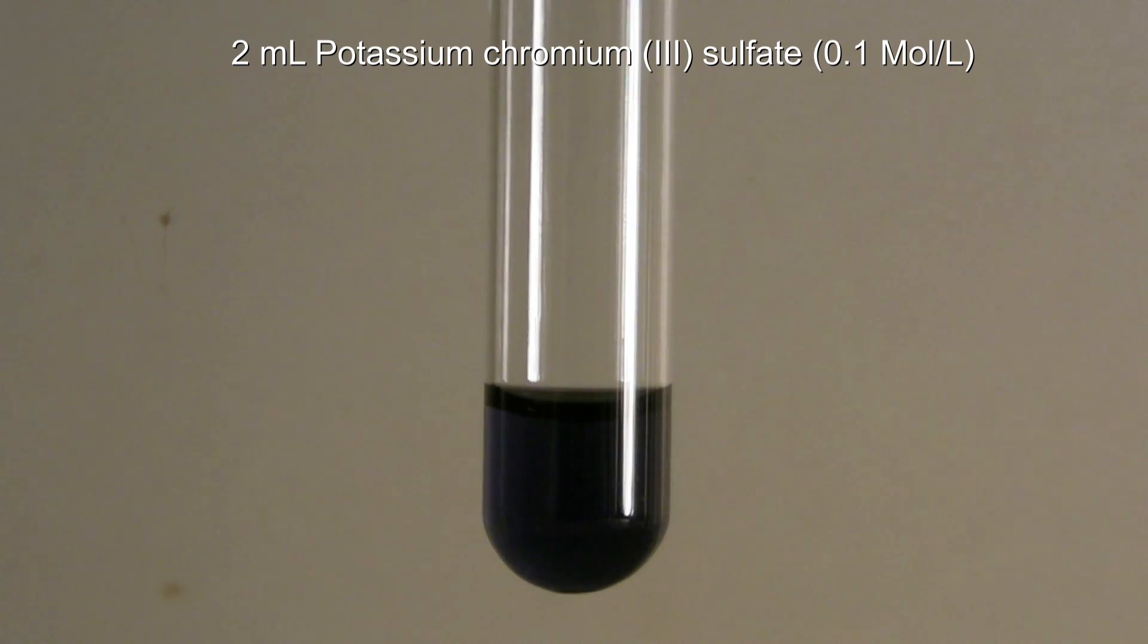At first, 2 ml of a solution containing a Chromium-3 salt with a concentration of 0.1 mol per liter are added to a test tube. Here potassium Chromium-3 sulfate is used.